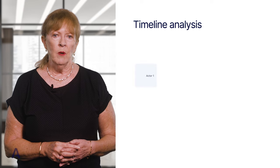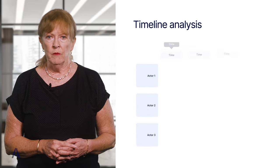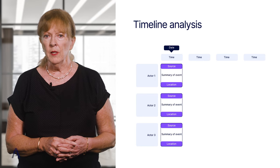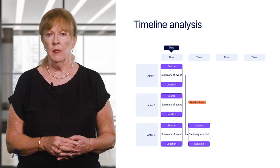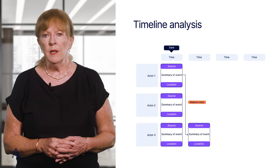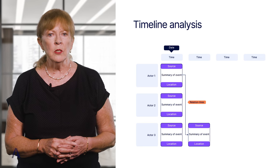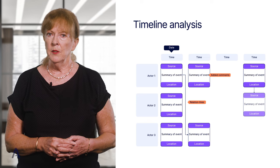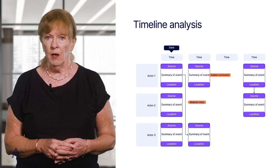This is an example of a timeline capture of events that can be recorded into an Excel spreadsheet. In this case, actors 1, 2 and 3 and so on on the vertical scale could be people, places or events, which are significant at various times indicated at the top from left to right. You will note that the source of the information and the location where it occurred can be included as well, as well as any other information that might be relevant at the time.